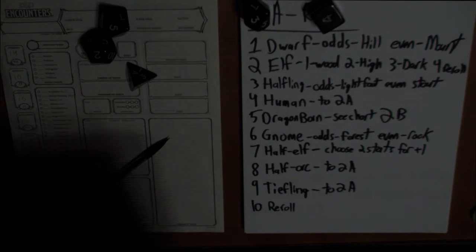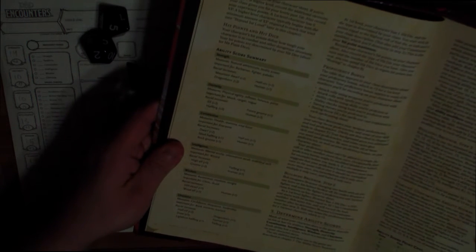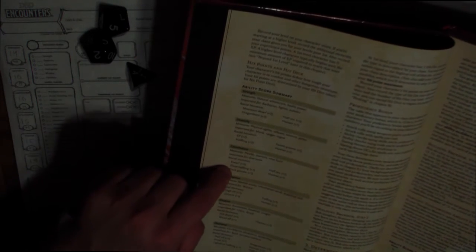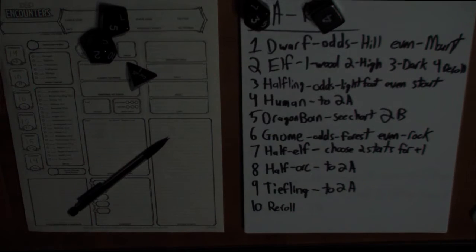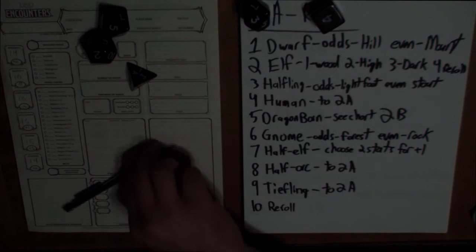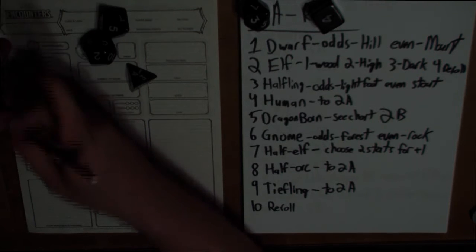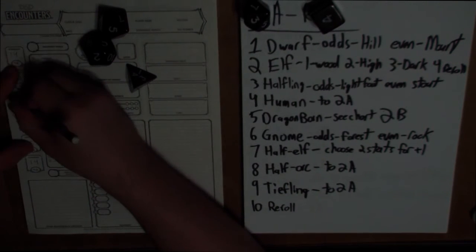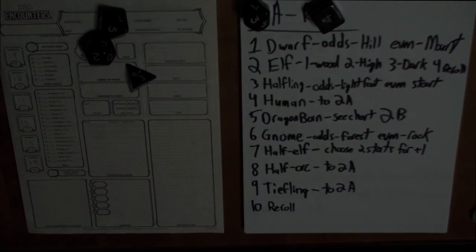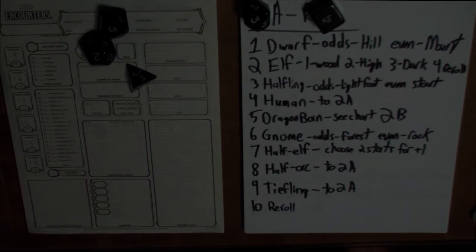Let me refer to the book. There's a handy ability score summary on page 12. Halfling gives us a plus 2 to dexterity, and stout gives us a plus 1 to constitution. So we now have a 12 dexterity for a plus 1 bonus, and an 11 constitution which isn't initially great, but we can build from there. We can feasibly go anywhere we want with this character, though it's probably best to play to our strengths — which we're not getting to choose.